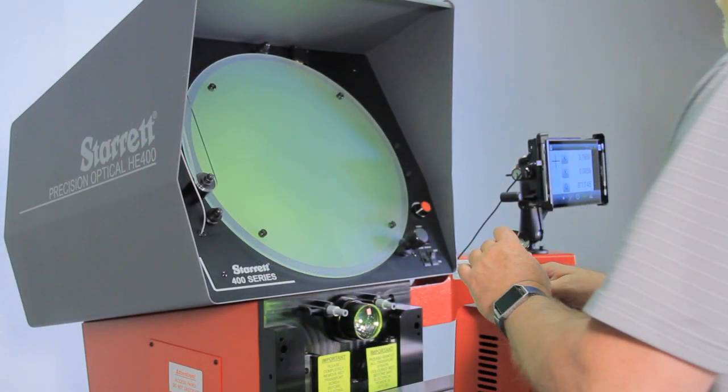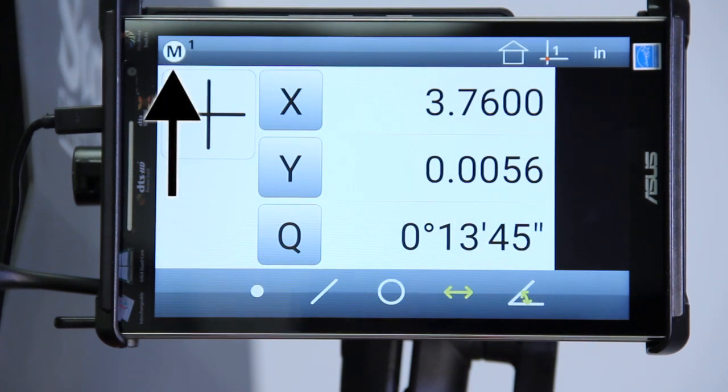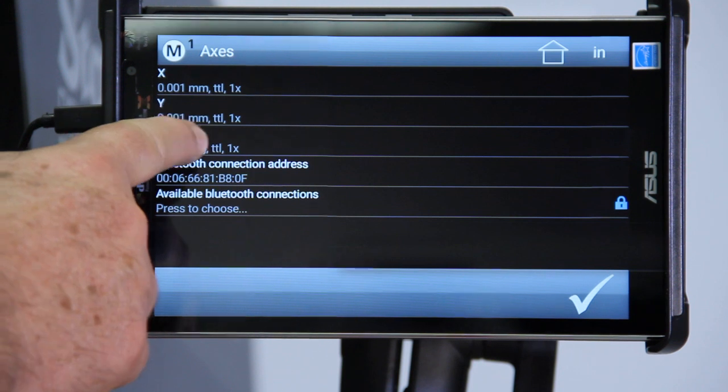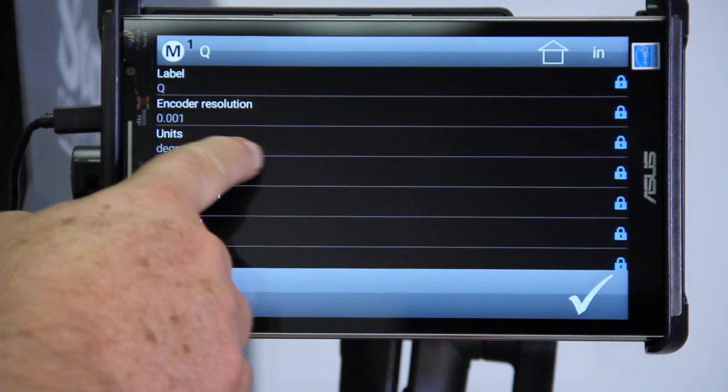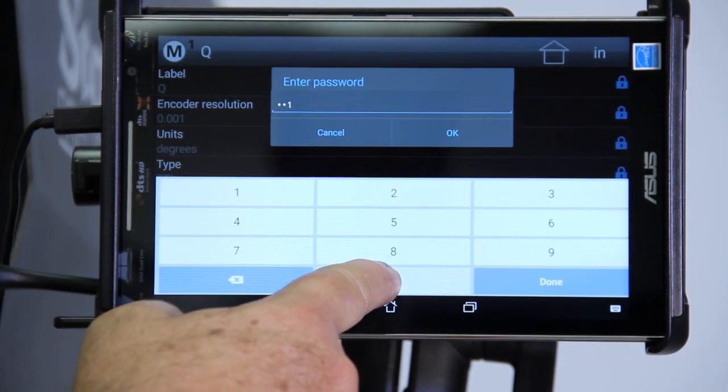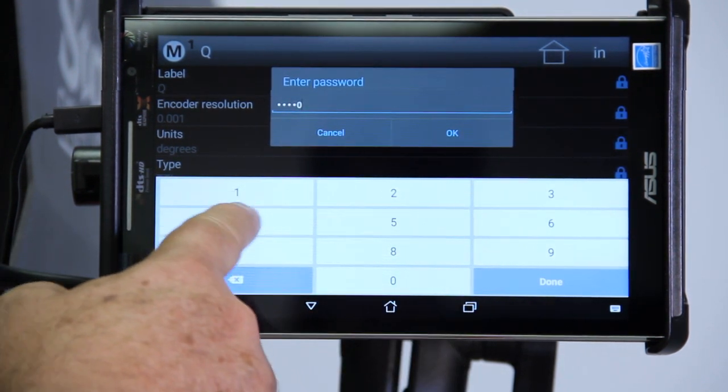Your machine is ready for use. Tap the M1 emblem, then go to the setup button, go to the axes, go to Q axis, go to the resolution. It's going to ask you for a password. The password is 111004.